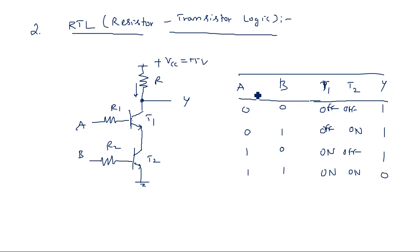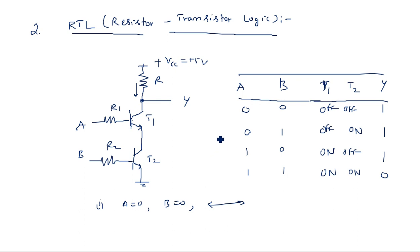In examinations, if you are asked to explain the operation of DTL, TTL, or RTL, you should draw the circuit and explain each situation. For situation 1, when A equals 0 and B equals 0, write that transistors T1 and T2 come into off states, so current flows from VCC to the output, and output equals 1. Explain stage by stage in statement form rather than just a table. Thank you.